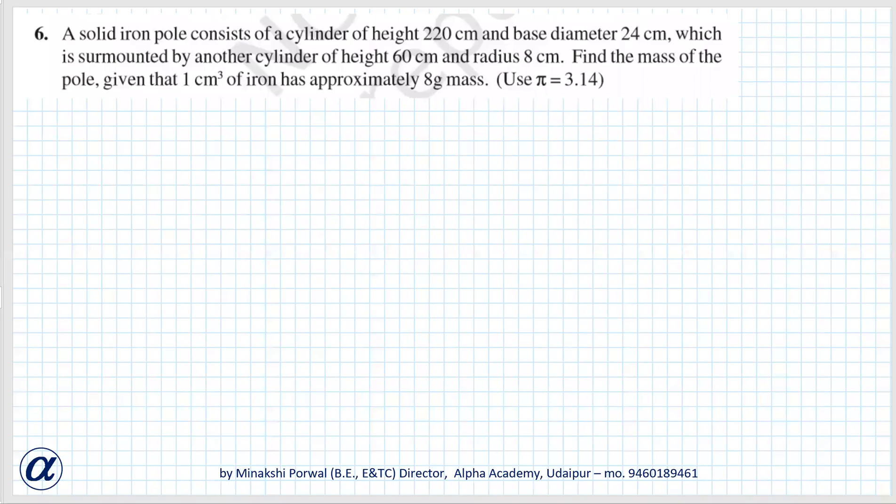Exercise 13.2 question number 6. A solid iron pole consists of a cylinder of height 220 cm and base diameter 24 cm which is surmounted by another cylinder of height 60 cm and radius 8 cm. So you have to imagine first of all that there is a cylinder and above it there is one more cylinder.